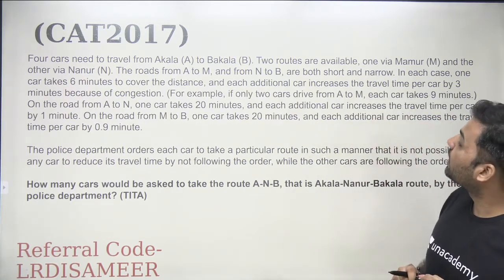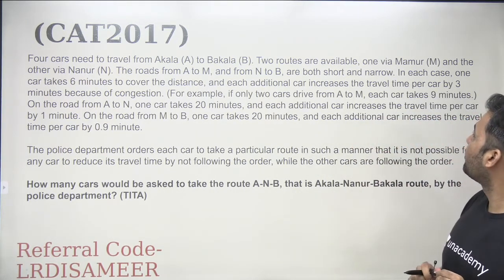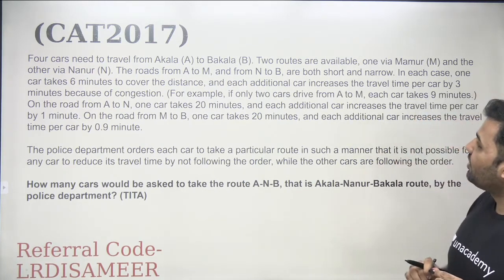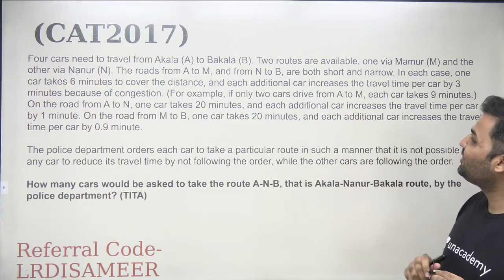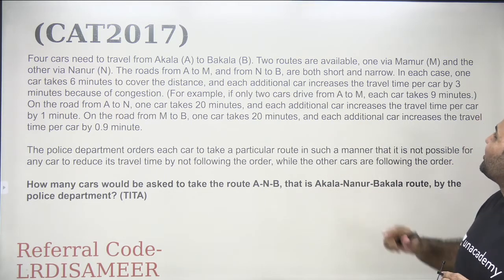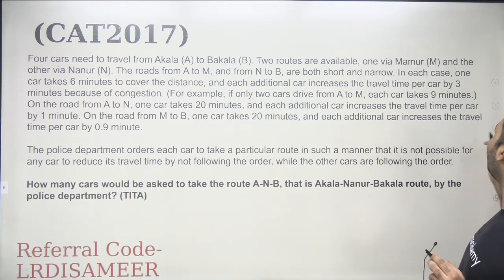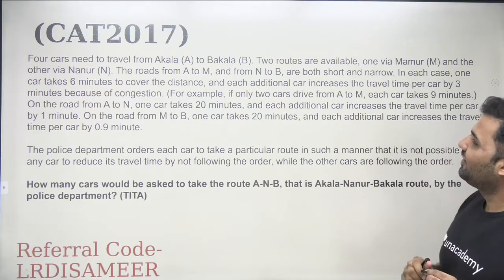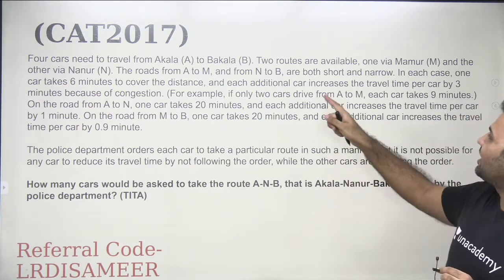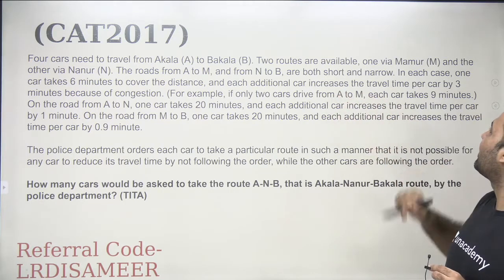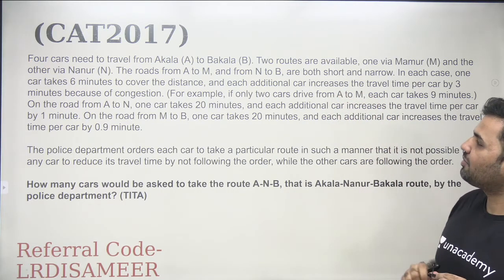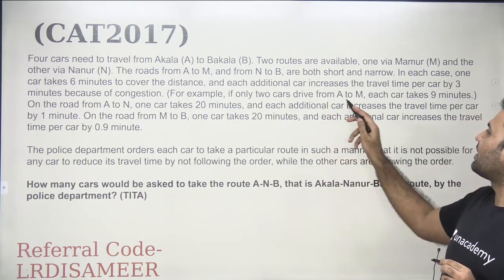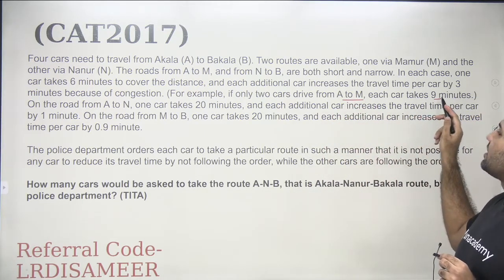Four cars need to travel from Akala to Bukala. Two routes are available: one via Mammoor and the other via Nanur. The roads from A to M and from N to B are both short and narrow. In each case one car takes six minutes to cover the distance, and each additional car increases the travel time per car by three minutes because of congestion.